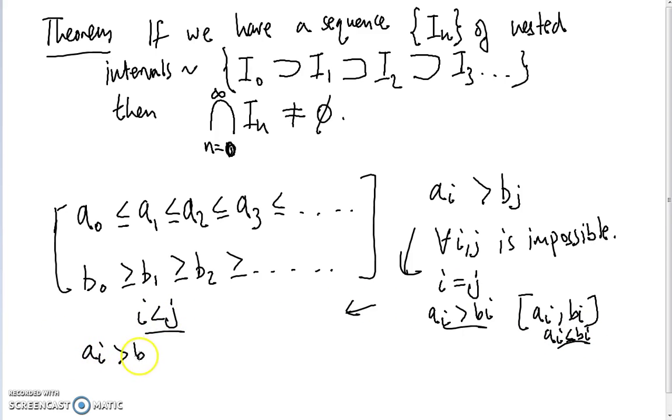Then we have another case to consider: let's say i is less than j. What happens if a_i is greater than b_j in this case? Well if i is less than j then a_i is less than or equal to b_i. But remember b is a descending sequence, so b_i is less than or equal to the previous term, which is less than or equal to the previous previous term, and eventually we'll reach b_j because j is greater than i. So there's our contradiction, and similarly we can prove it for when i is greater than j. So this is impossible in any case.